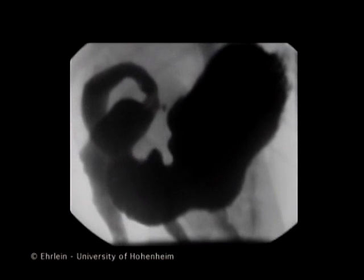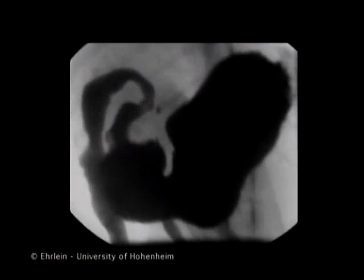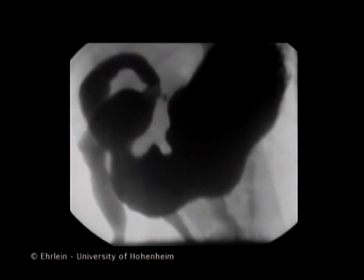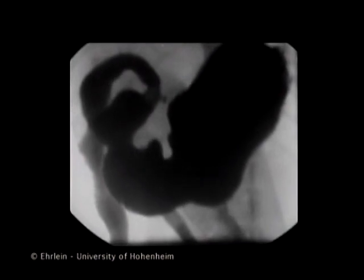After a non-caloric viscous meal, marked constrictions of the antral waves cause rapid emptying associated with an intensive mixing of the gastric chyme. In the current video clip, cellulose gum was used to obtain a viscosity similar to that of ketchup.